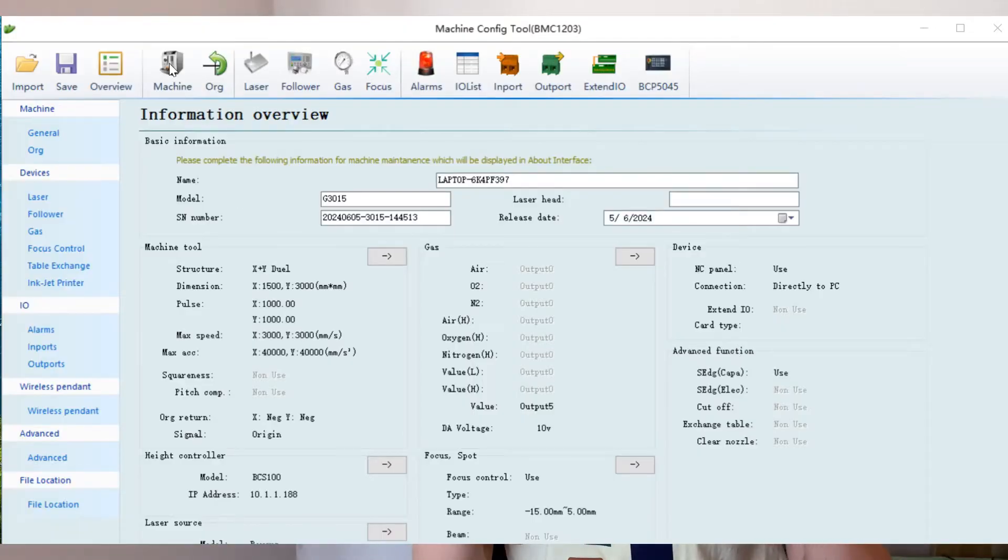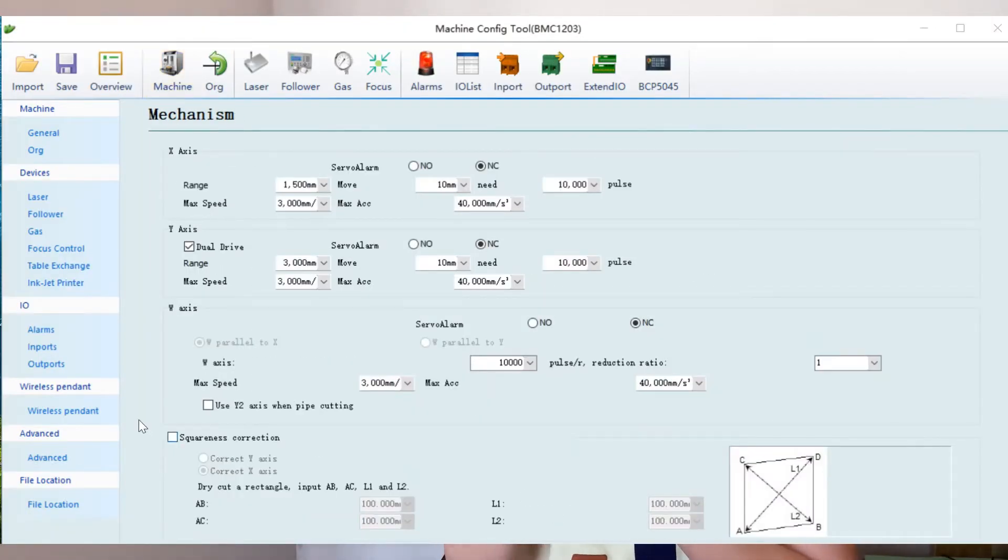Go to machine configure tool machine. In the lower part, we could see the screen correction. Select X or Y according to the part deviation direction. Fill in the rectangular part measurement data here according to the graphic example on the right.